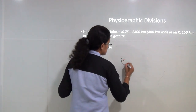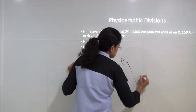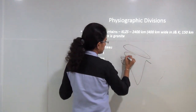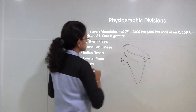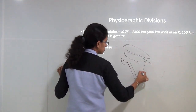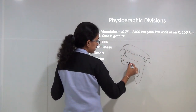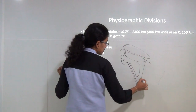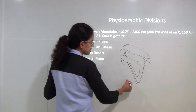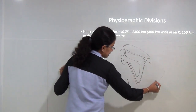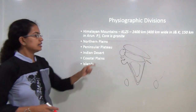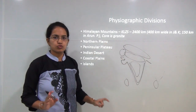We can broadly classify the regions of India into 6 physiographic divisions: the northern Himalayan region, the northern plains, the peninsular plateau, the desert region of India, the coastal regions of India, and finally the island groups. We will understand these regions one by one.